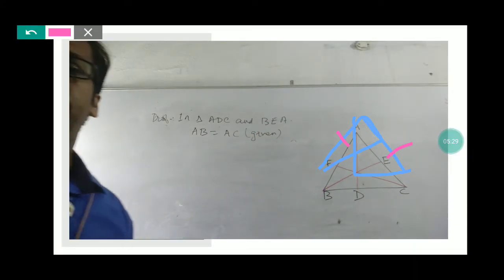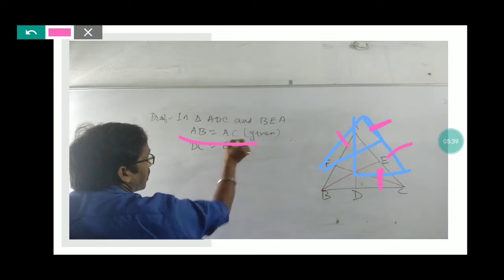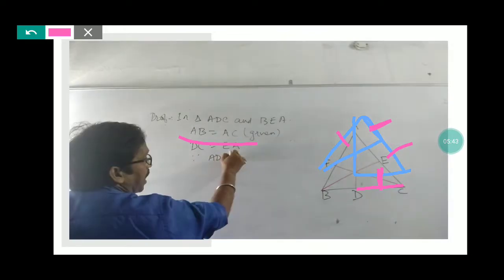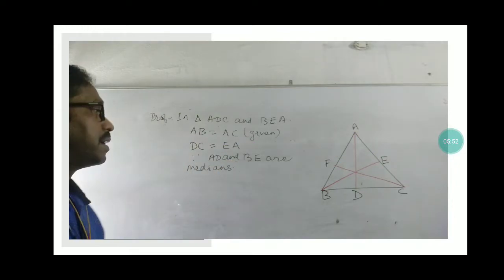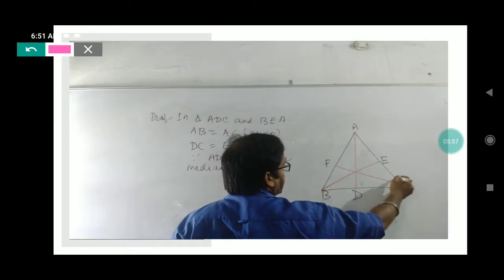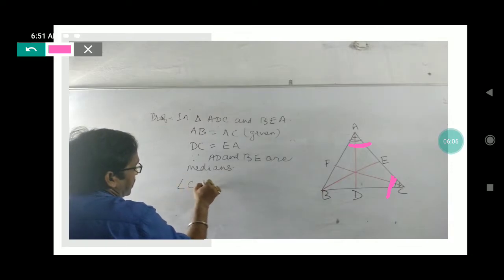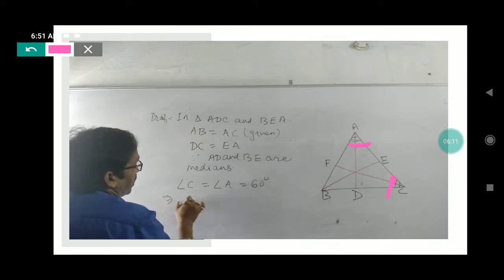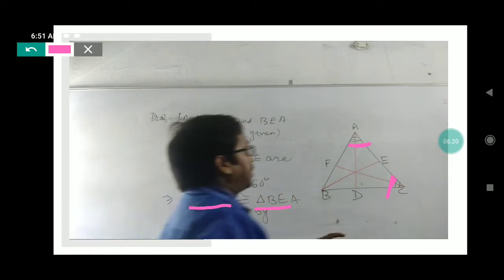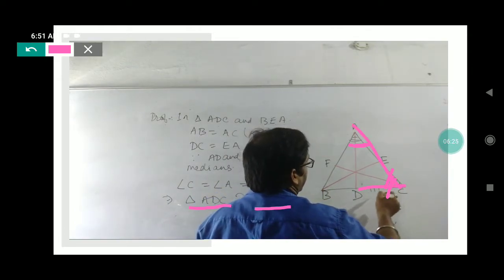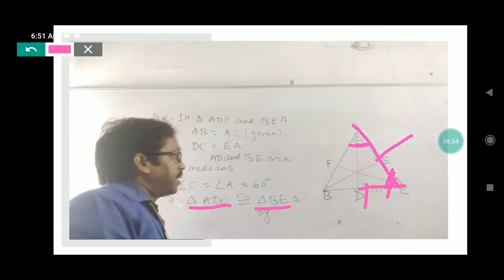This side is equal to this side because AB equals AC. By the median property, the corresponding half-sides are also equal. The third condition is the included angle — angle C and angle A are common angles in the respective triangles. They are each equal to 60 degrees, as per the property of an equilateral triangle. So angle C equals angle A. Therefore, by Side-Angle-Side (SAS), these two triangles are congruent, using two sides and the included angle.